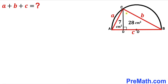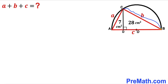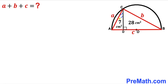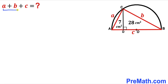Welcome to pre-math. In this video we have got a red triangle ABC along with a perpendicular CD fully inscribed in a semicircle with center O. Side length AC is represented by lowercase a, side length BC by lowercase b, and side length AB by lowercase c. The area of triangle ACD is 7 cm² whereas the area of right triangle BCD is 28 cm². Our task is to find the value of a plus b plus c.